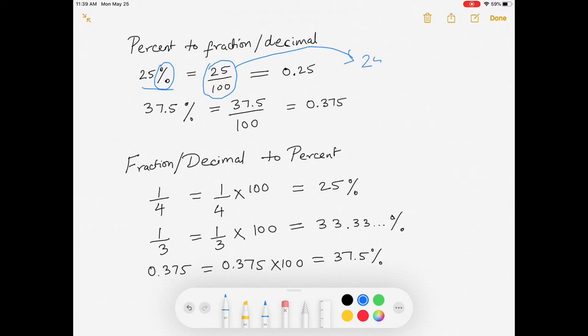So you need to further reduce 25 over 100 by dividing both the numerator as well as the denominator, the top and the bottom, by 25 in this case. So whatever number divides both the top and the bottom perfectly, you use that. So for example,